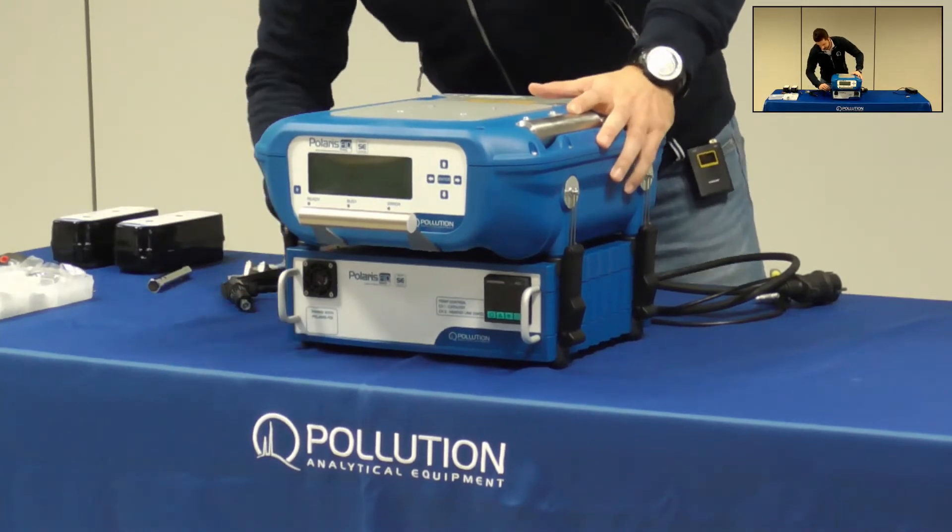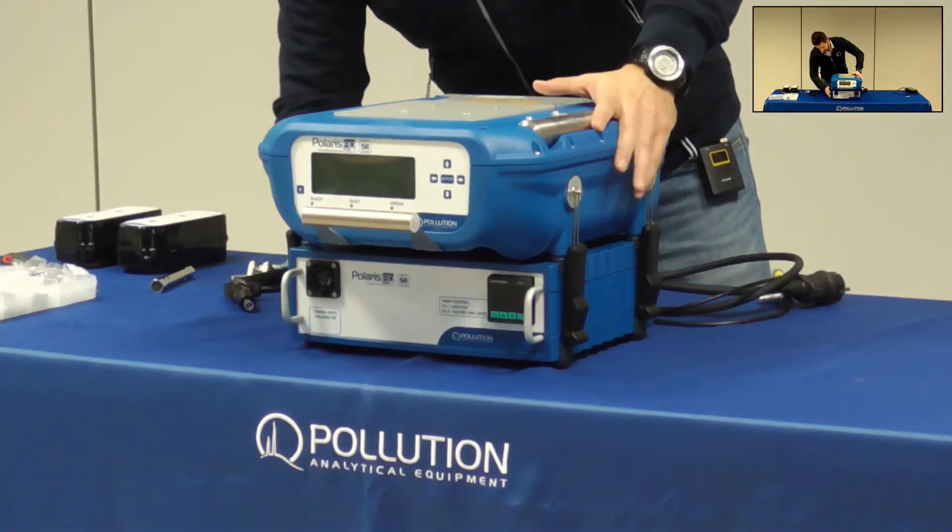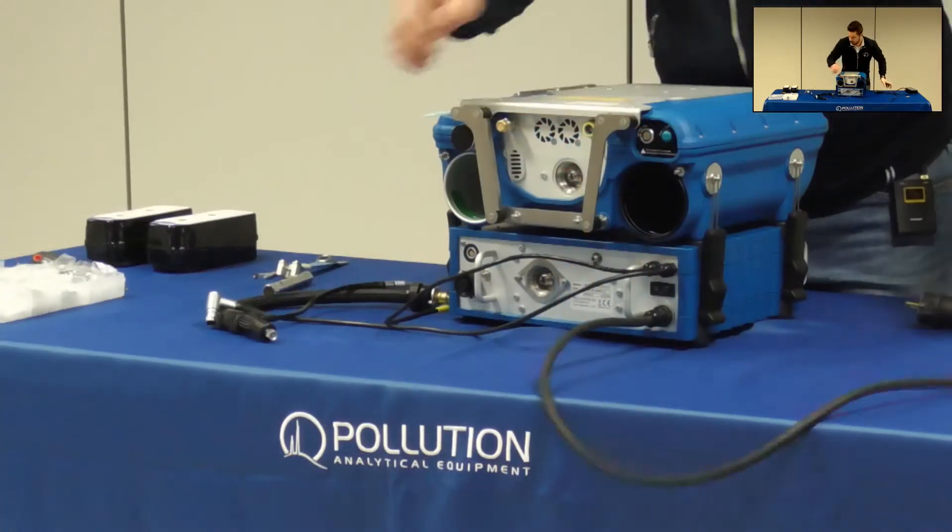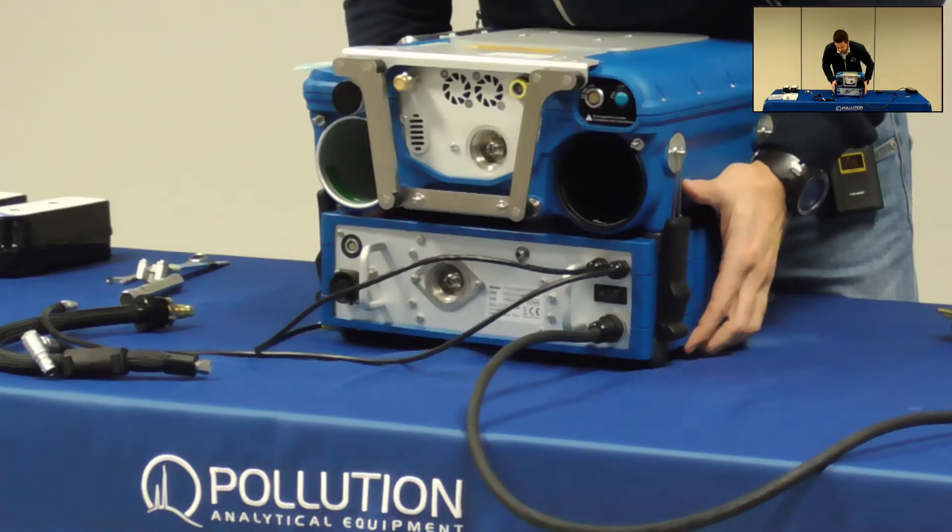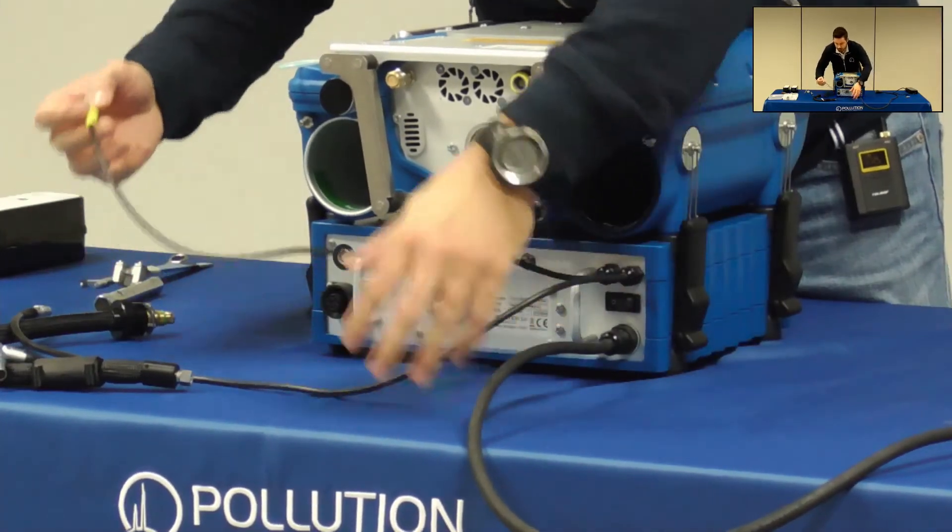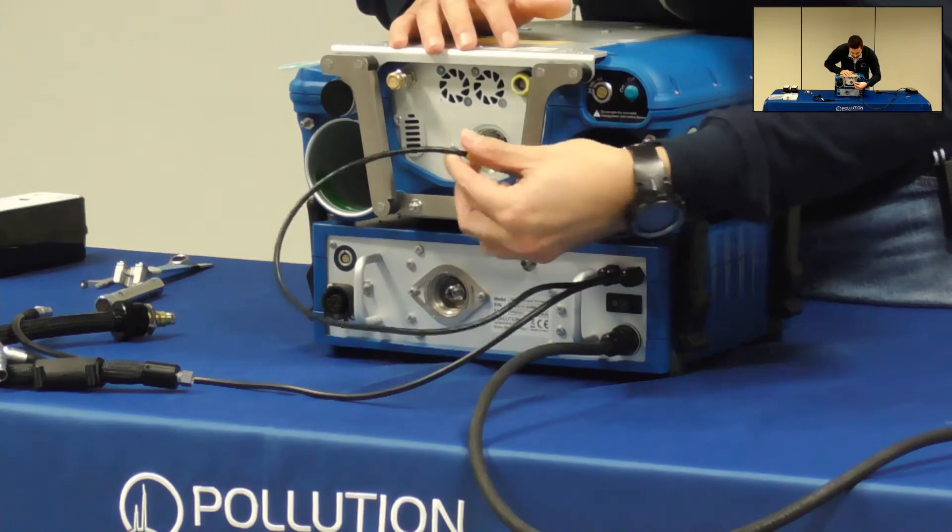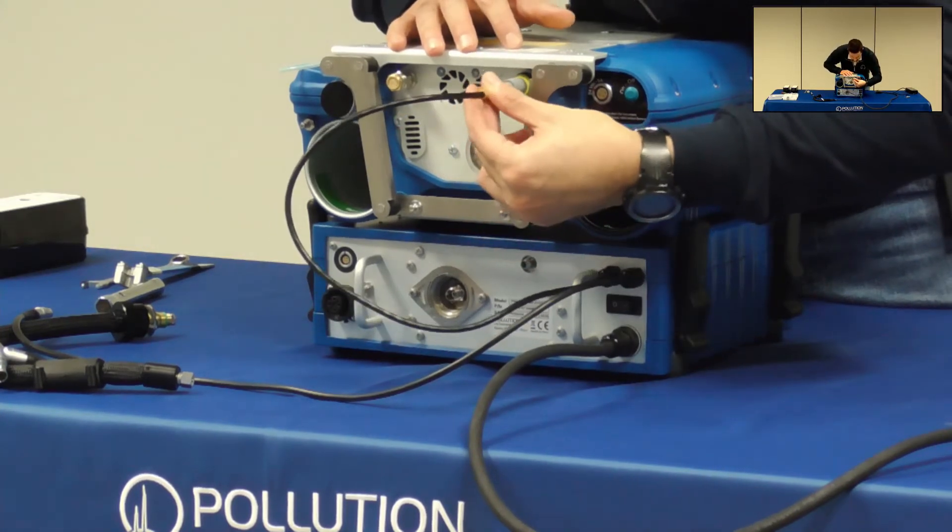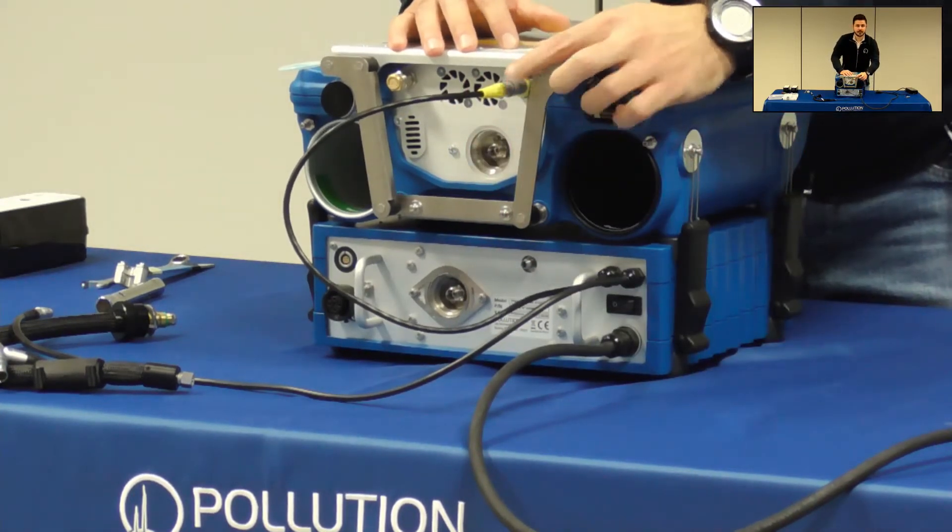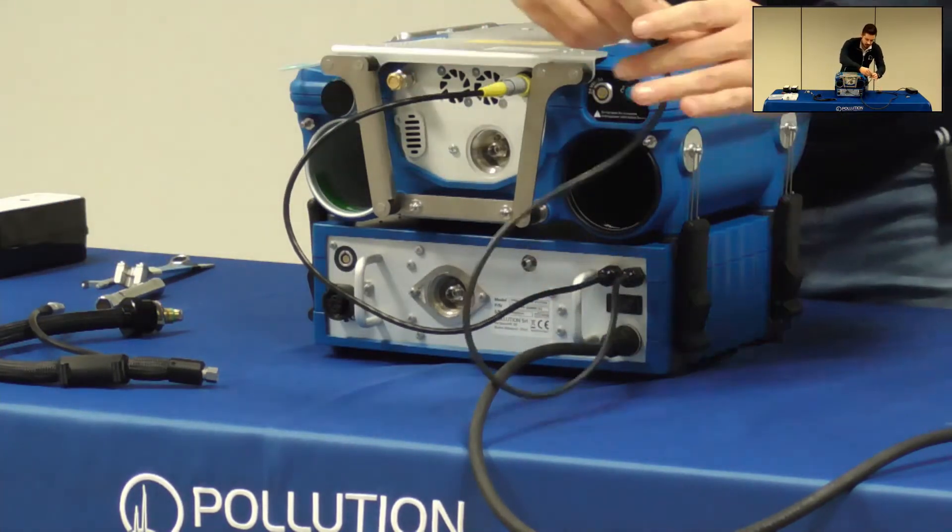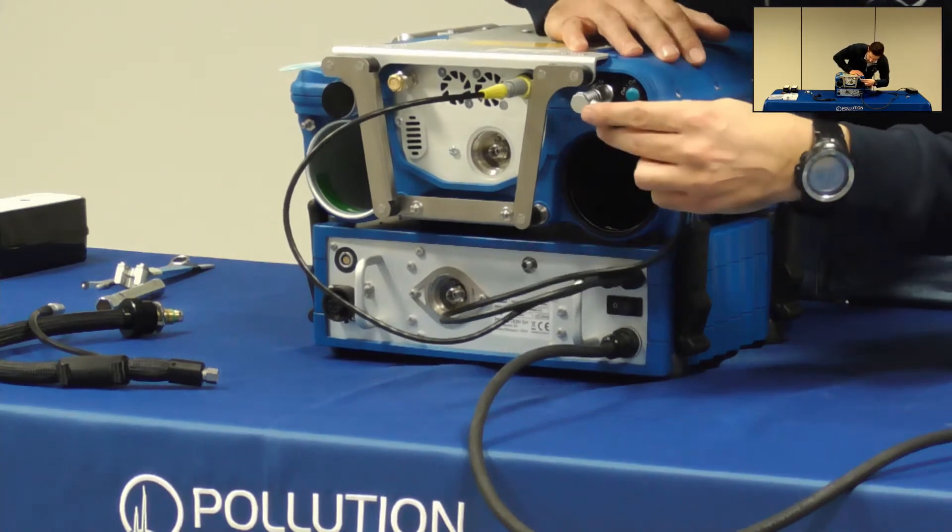Going on the back of the instrument there are three cables that need to be connected. The yellow one is for data transfer between the two devices and needs to be plugged in here. The power cable goes from the docking station to the plug next to the blue button on the Polaris.